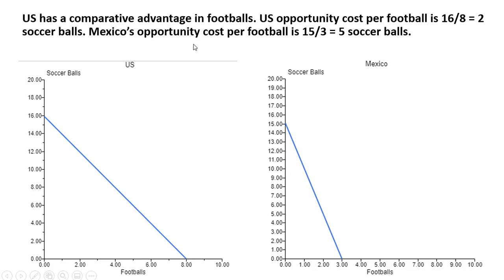For Mexico, the opportunity cost of producing one more football is again the vertical intercept divided by the horizontal intercept, so 15 divided by 3 is 5. Every time Mexico produces one more football, they give up producing five soccer balls. Based on these numbers, the US is the low opportunity cost producer of footballs — the US only gives up two soccer balls to produce a football, while Mexico gives up five. So the US has the comparative advantage in footballs.